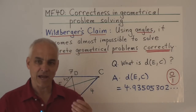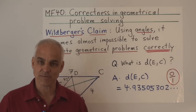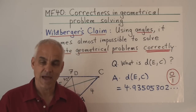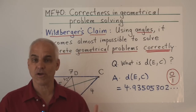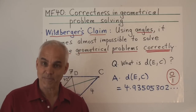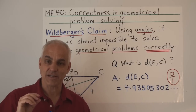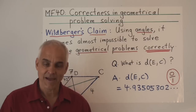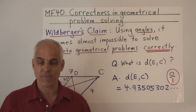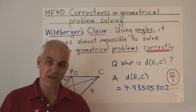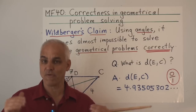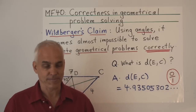In other words, I claim that even professional mathematicians teaching at universities near you cannot solve the majority of natural geometrical problems correctly. They can solve these things approximately, but when it comes to completely correct answers, they fall down. It's not because they're not smart enough — it's because the technology, the conceptual framework, is not the right one.